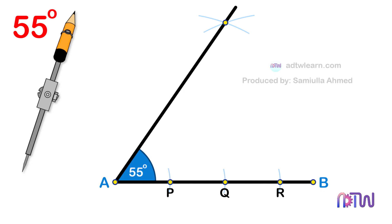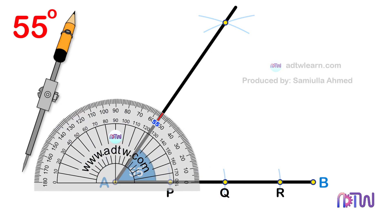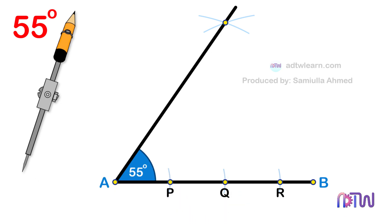You can cross-check by using a protractor. I hope this video helped you understand how to make a 55 degree angle.